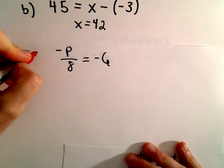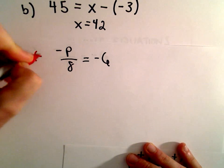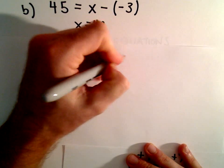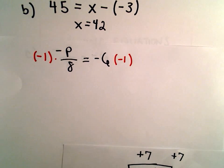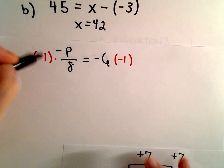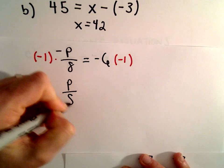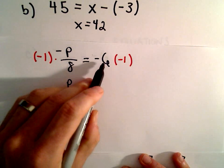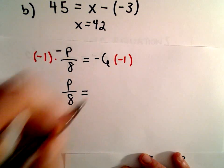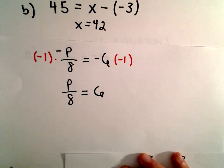First, to get rid of the negative on the left side, I'm going to multiply both sides by negative 1. A negative multiplied by a negative is a positive, so that leaves us with P over 8 on the left side. And negative 6 multiplied by negative 1 gives us positive 6.